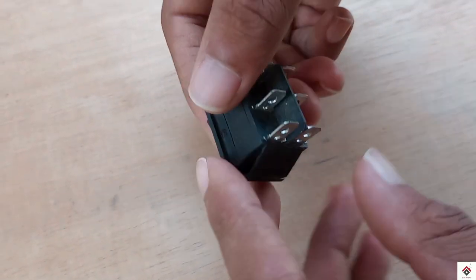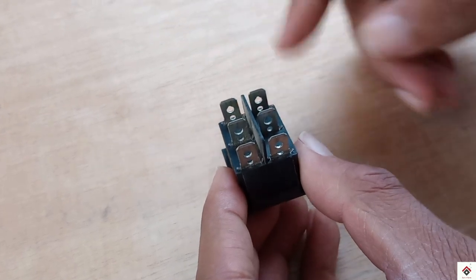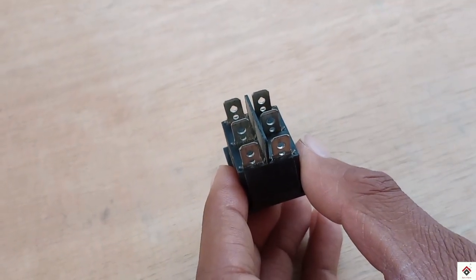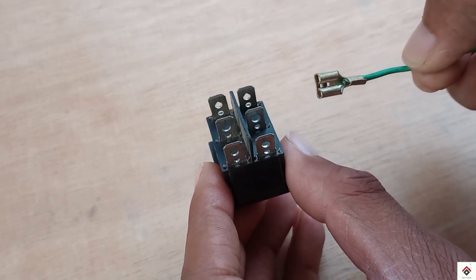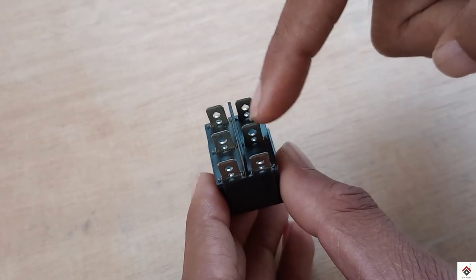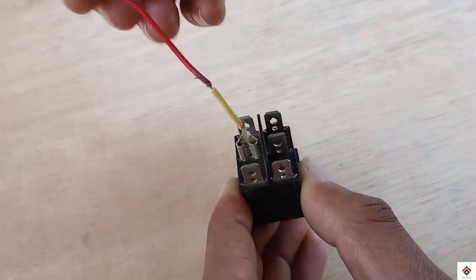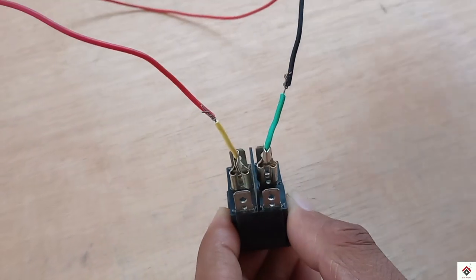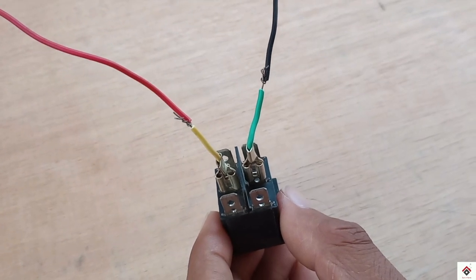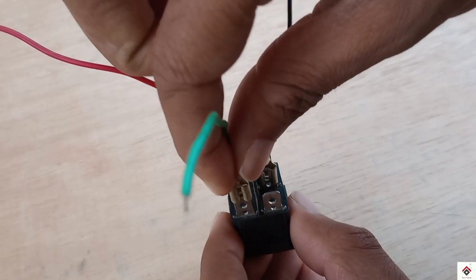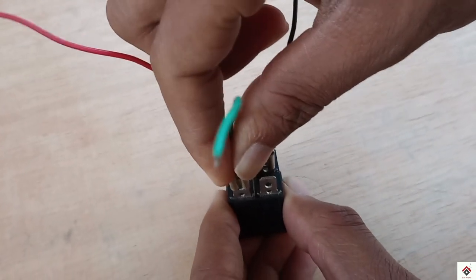The connection is very simple. You have six terminals. The center two terminals will directly go to the battery positive and negative, you can connect in any direction. Next, the terminals on one side will go to the motor terminals.